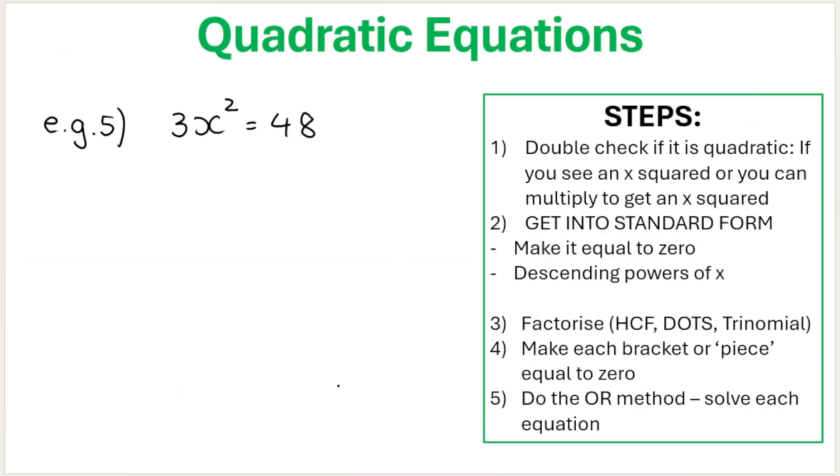Last example. Remember what I said from the third example. Very important. As soon as you see x squared, you need to get it into standard form. So 3x squared, opposite of plus 48 is minusing 48. You've got it into standard form. It is now equal to zero. Then we need to factorize. Highest common factor is the one that we must always try first. Can I take something out of these terms? Yes, I can take out a 3.